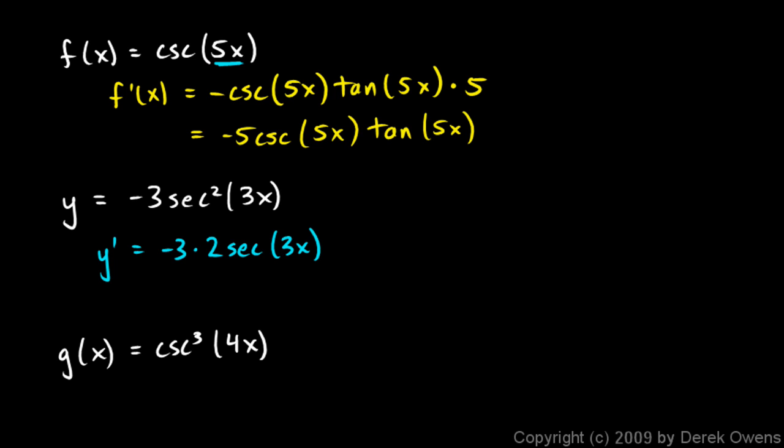Then I need to differentiate my inner function. My outer function here was the squaring, my inner function is secant of 3x. So I multiply all of this by the secant of 3x, and the derivative of the secant of 3x is going to be the secant of 3x times the tangent of 3x.